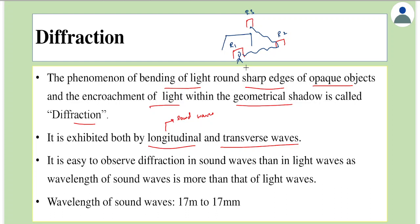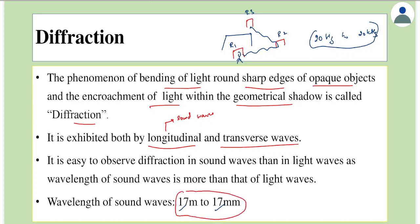Diffraction in case of sound waves is very obvious because of its wavelength. The human audible range is from 20 Hz to 20 kHz. Translating this into wavelength, the corresponding wavelengths would be 17 meters to 17 millimeters. Whenever an obstacle or object is of this dimension, the wave would diffract. Many objects around us — like doors, fans, and walls — have dimensions in this range, which is why diffraction is very common.